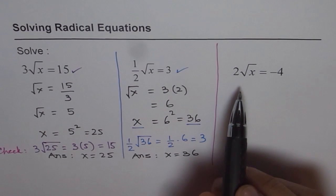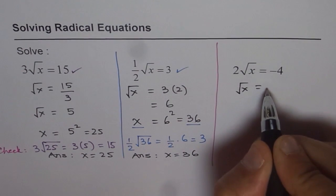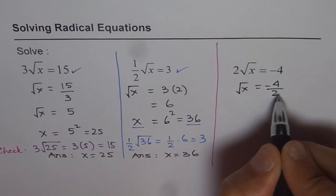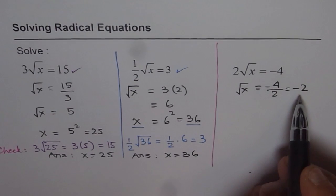Let's go with the solution first. So let's isolate, what do we get? We get √x = -4/2, that is -2. Now square root can never be negative. So there is a problem here.